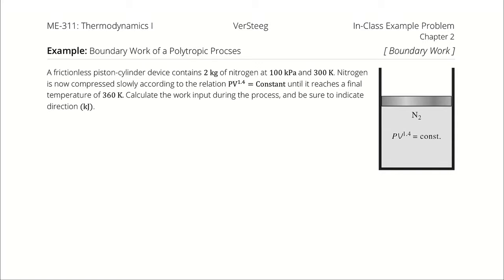A frictionless piston-cylinder device contains 2 kilograms of nitrogen at 100 kilopascals and 300 Kelvin. Nitrogen is now compressed slowly according to the relation pressure times volume to the 1.4 is constant until it reaches a final temperature of 360 Kelvin. Calculate the work input during the process and be sure to indicate direction.